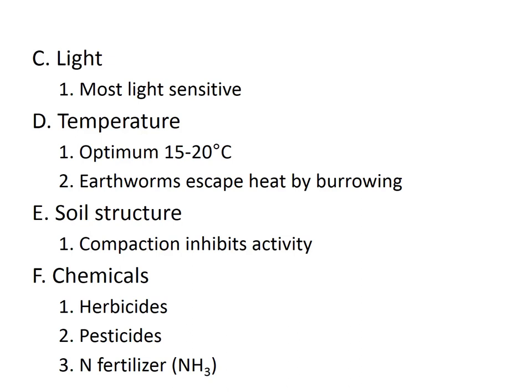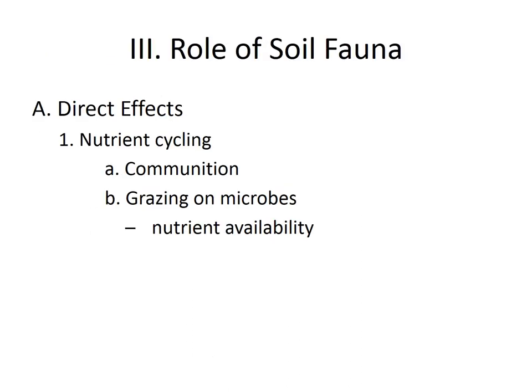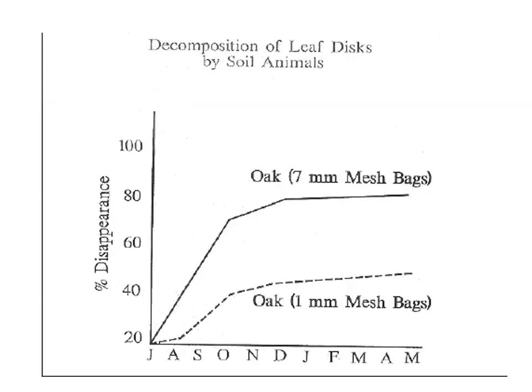The direct effect of fauna on soil includes their role in nutrient cycling. They perform comminution — cutting plant leaves into smaller sizes — which enhances surface area for microorganisms to begin degradation. They also have a direct effect through grazing on other microbes, influencing nutrient availability.